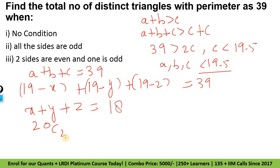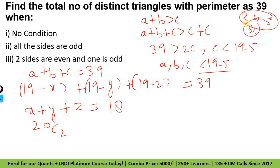So yahaan 22 jo aaya hai — yeh total triangles hain. But yahaan distinct triangles chahiye. Total triangles alag hain. Jaise koi triangle hai sides 3, 4, 5 — toh use 6 maana jayega kyunki 3 factorial ways mein arrange kar raha hai usko. But humko aisa nahi chahiye. Humko isko ek triangle maanna hai — 3,4,5 is 1 triangle. Similarly 3,3,6 — 1 triangle hai. Toh yahaan se humko kuch cases dekhne padenge.